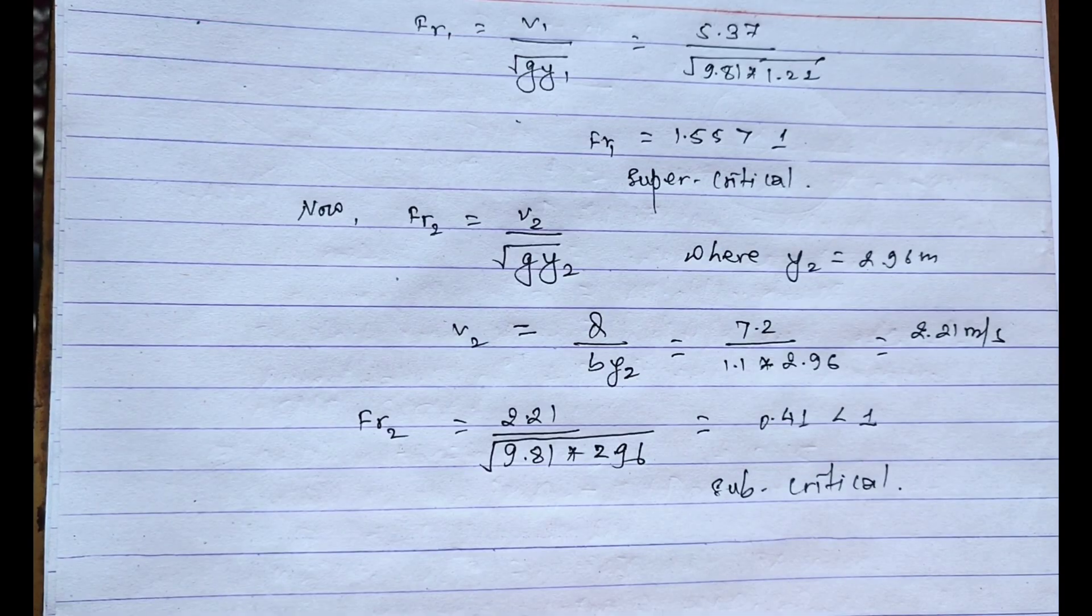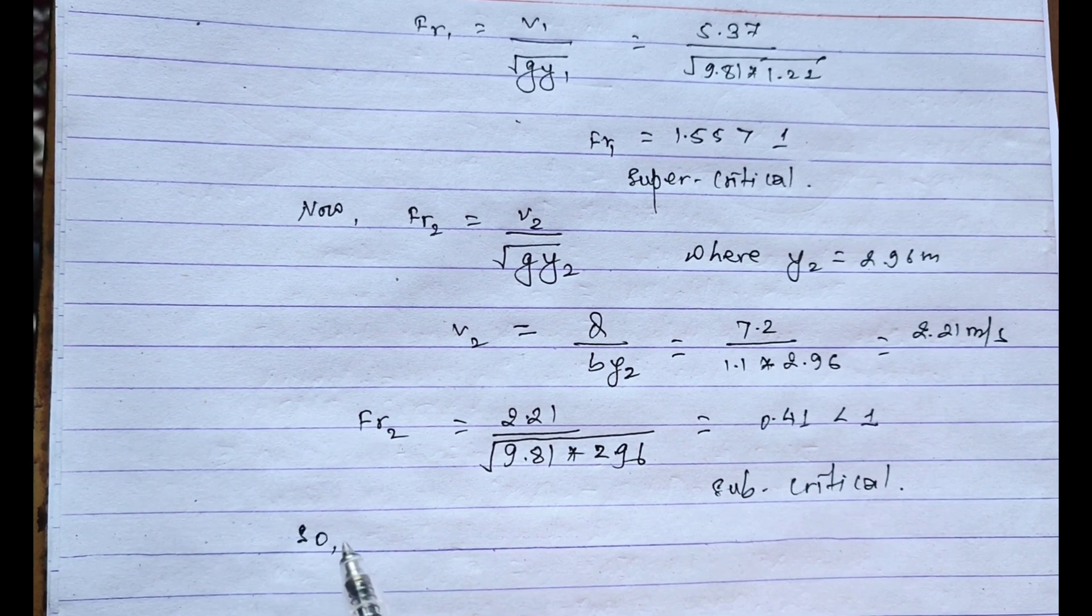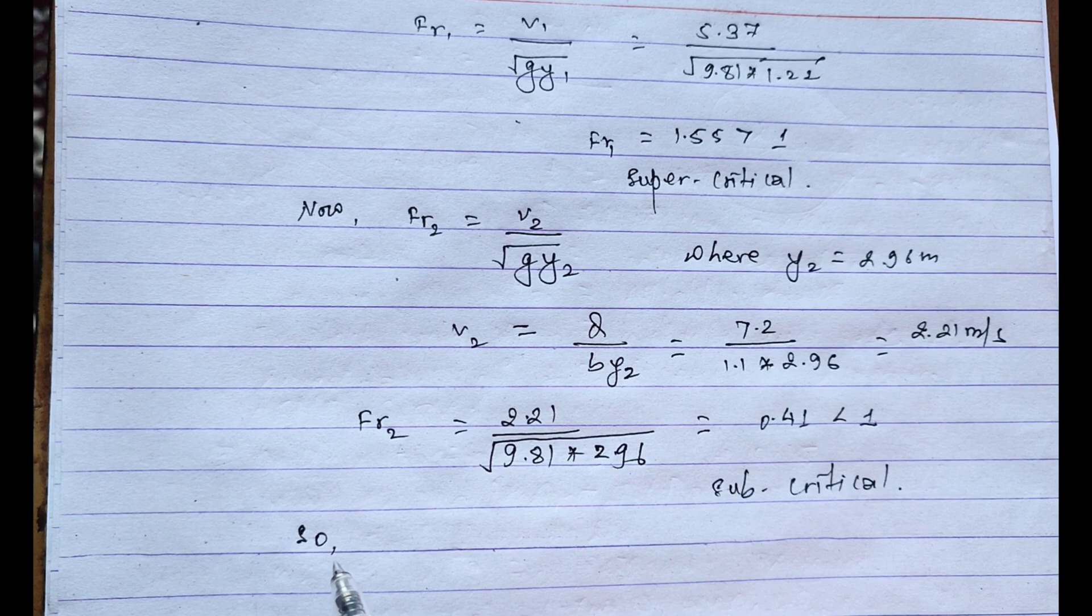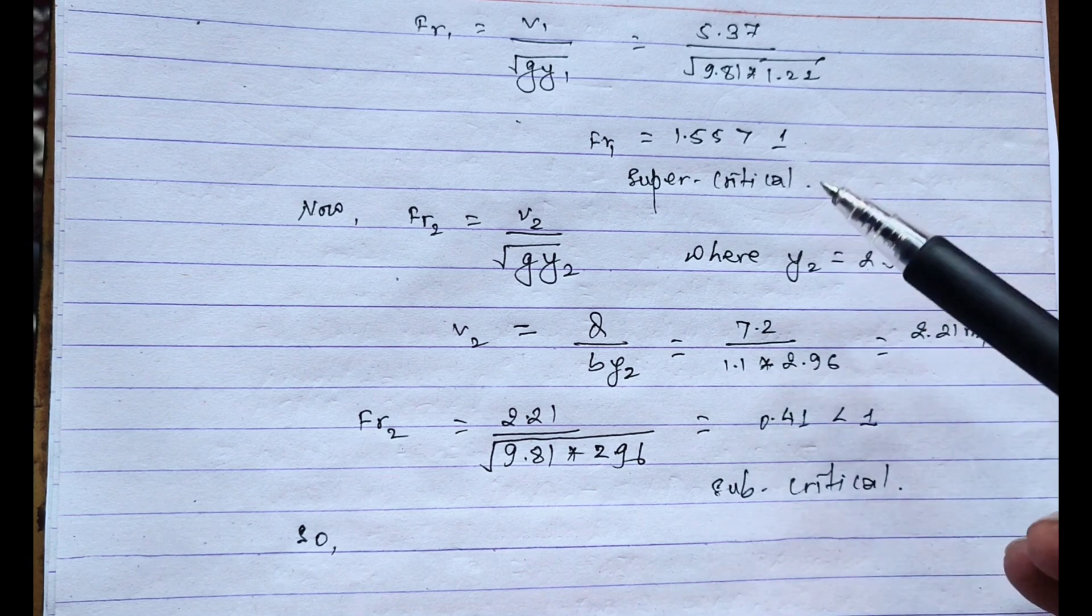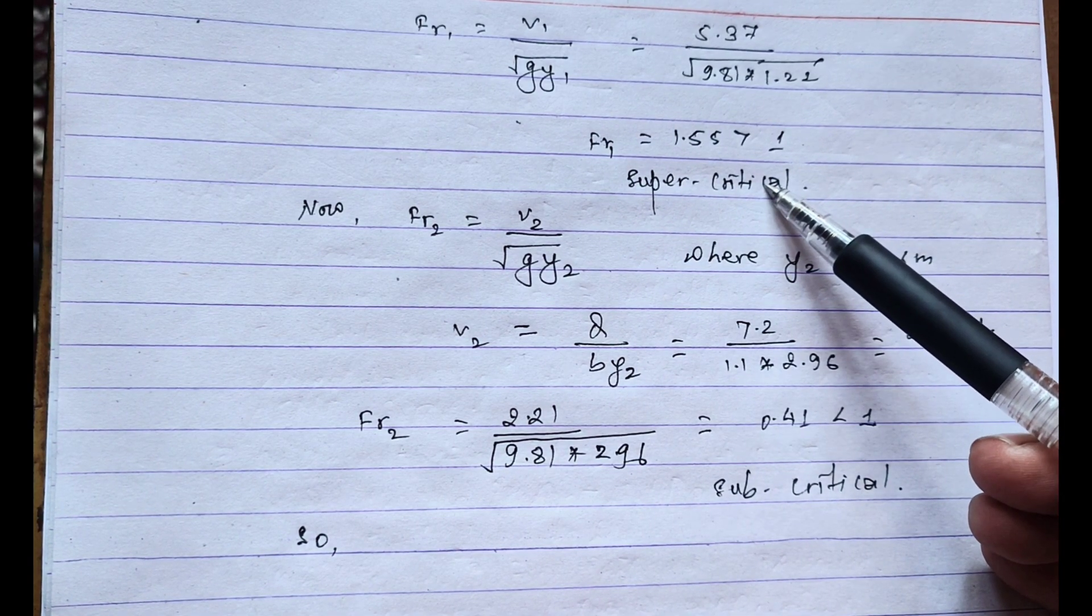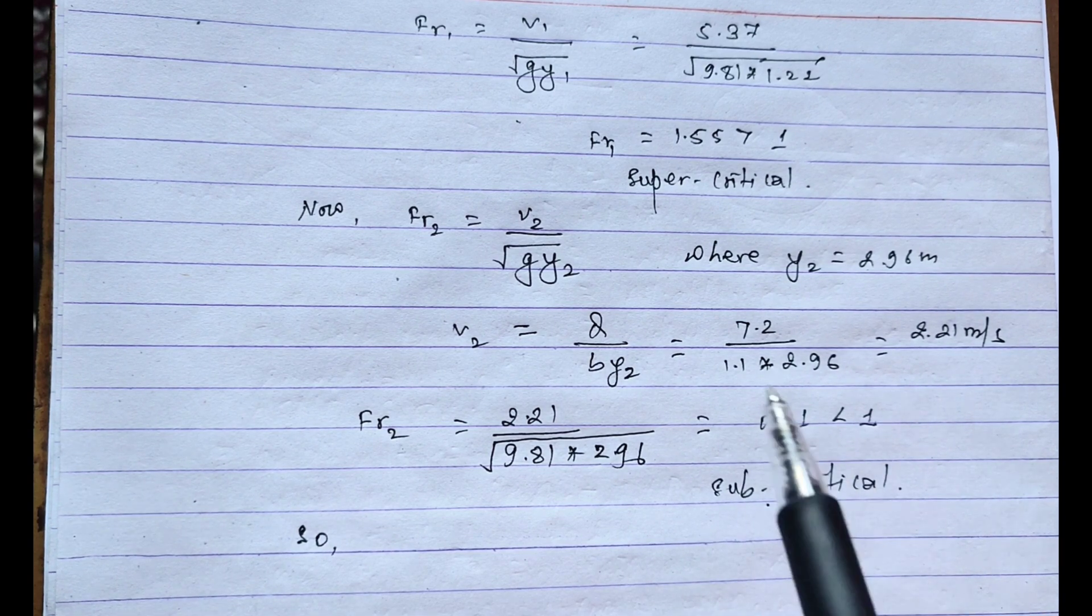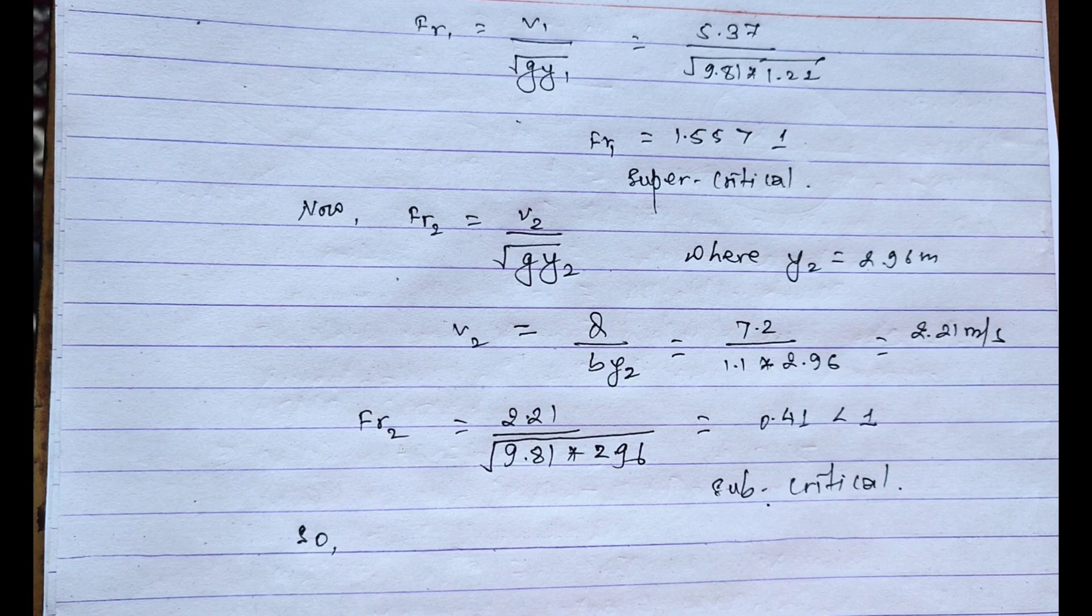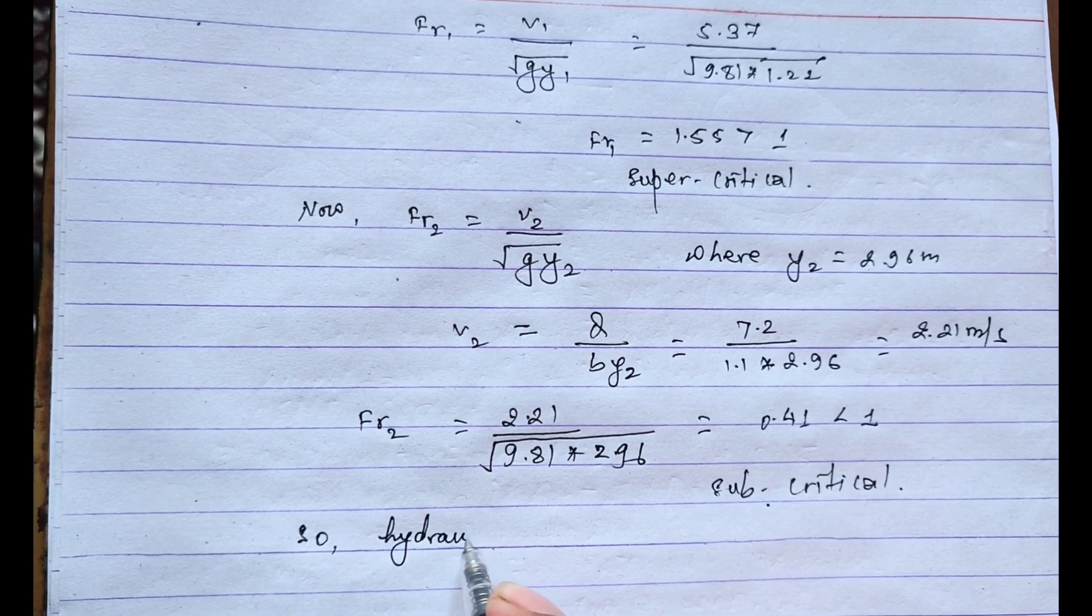So in this condition, the hydraulic jump will occur because the flow changes from supercritical to subcritical. In channel 1 the flow is in supercritical condition, and in channel 2 the flow is in subcritical. In such condition the hydraulic jump occurs.